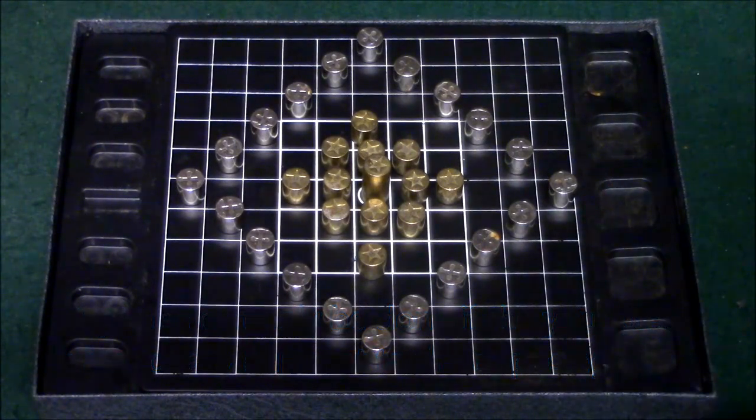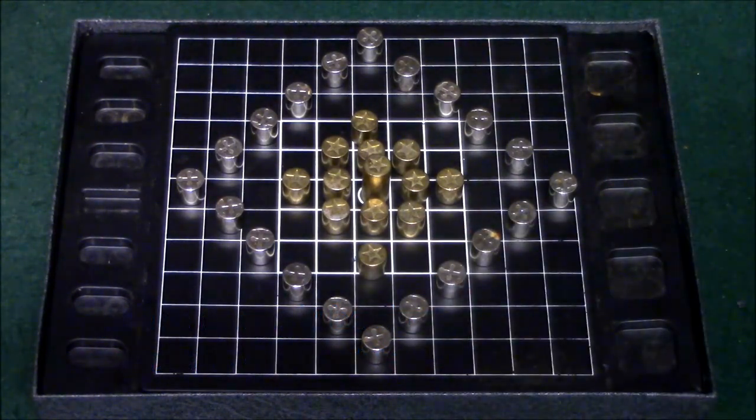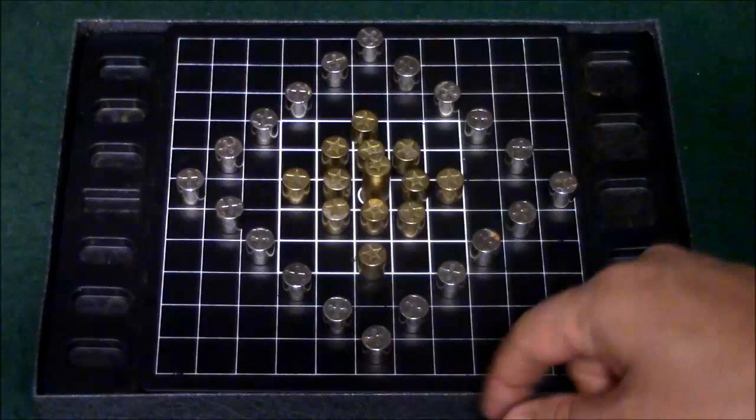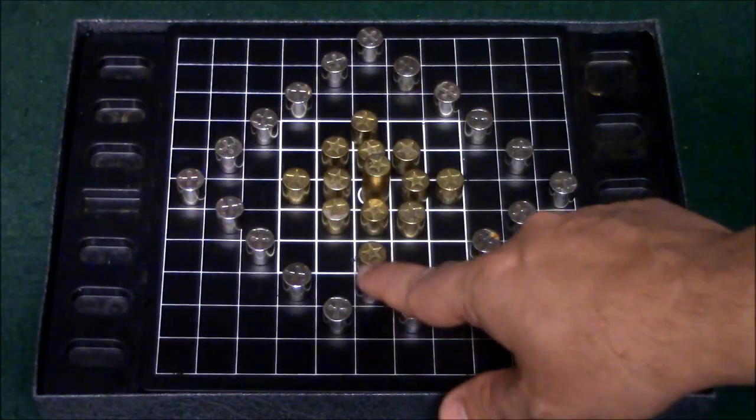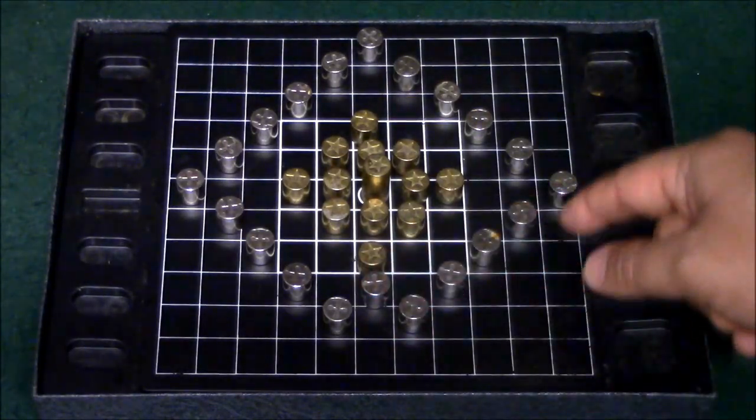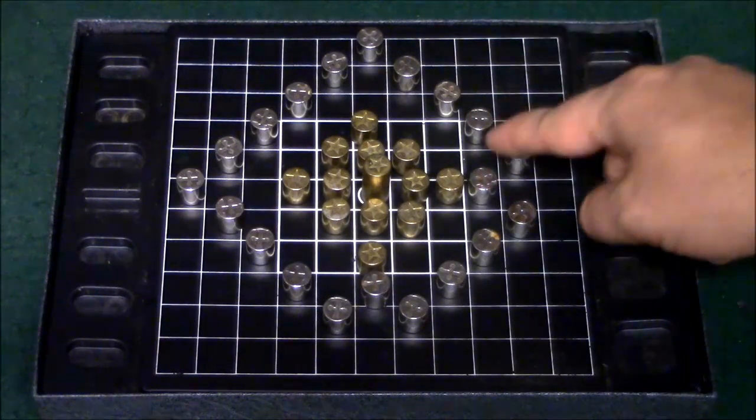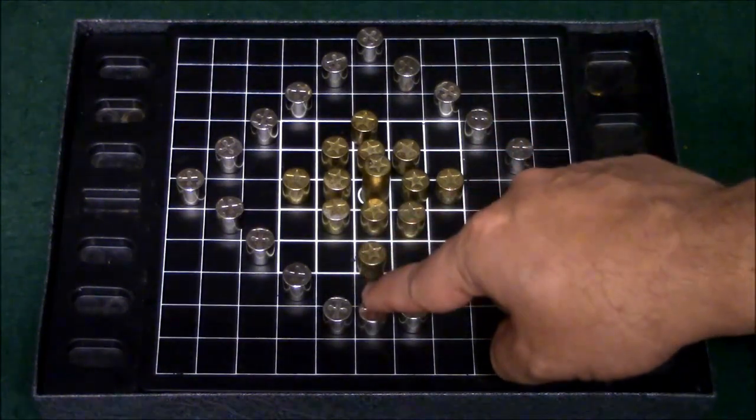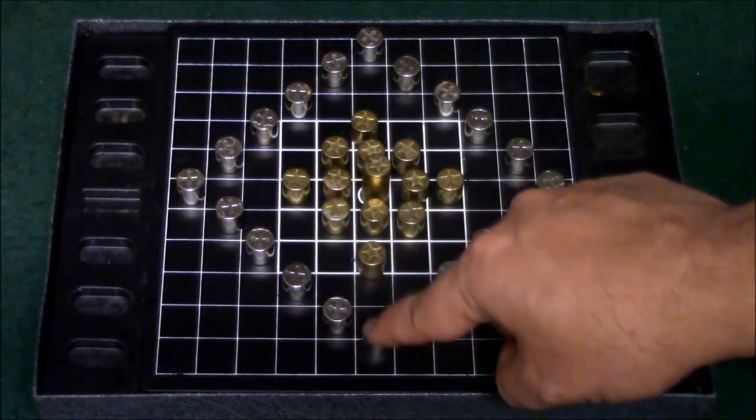Now on the silver player's turn, the silver player will be able to move two pieces once each. So for example, I can have silver go here for my first move and for my second move I could move this piece here. But I can't move one piece twice. I have to move two separate pieces once.